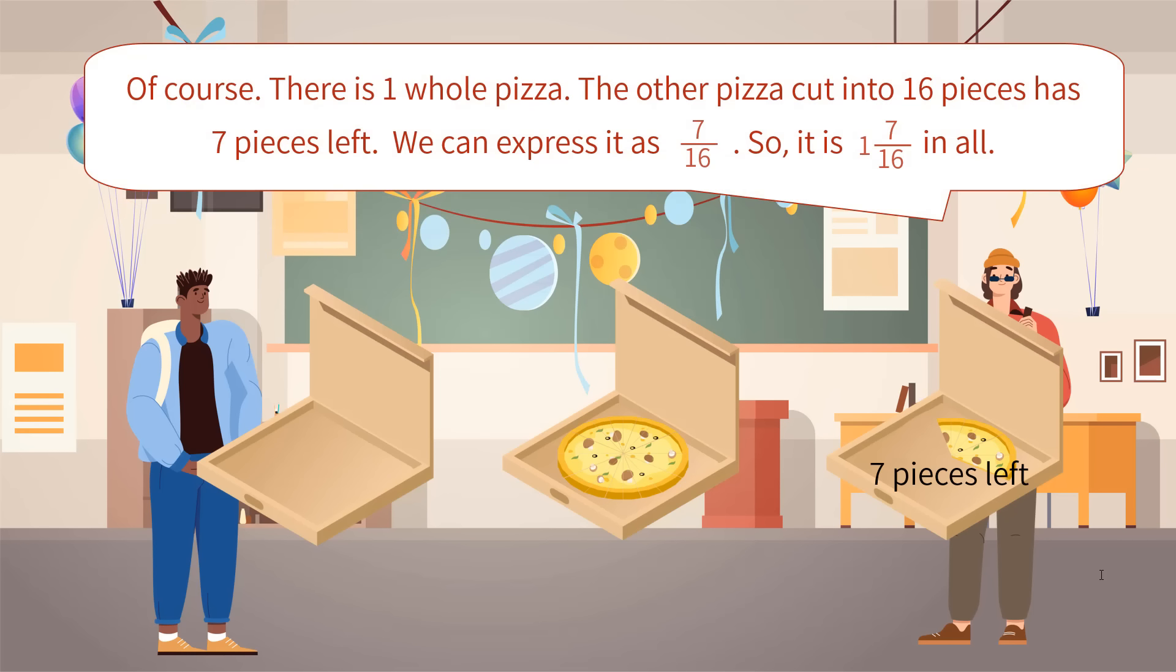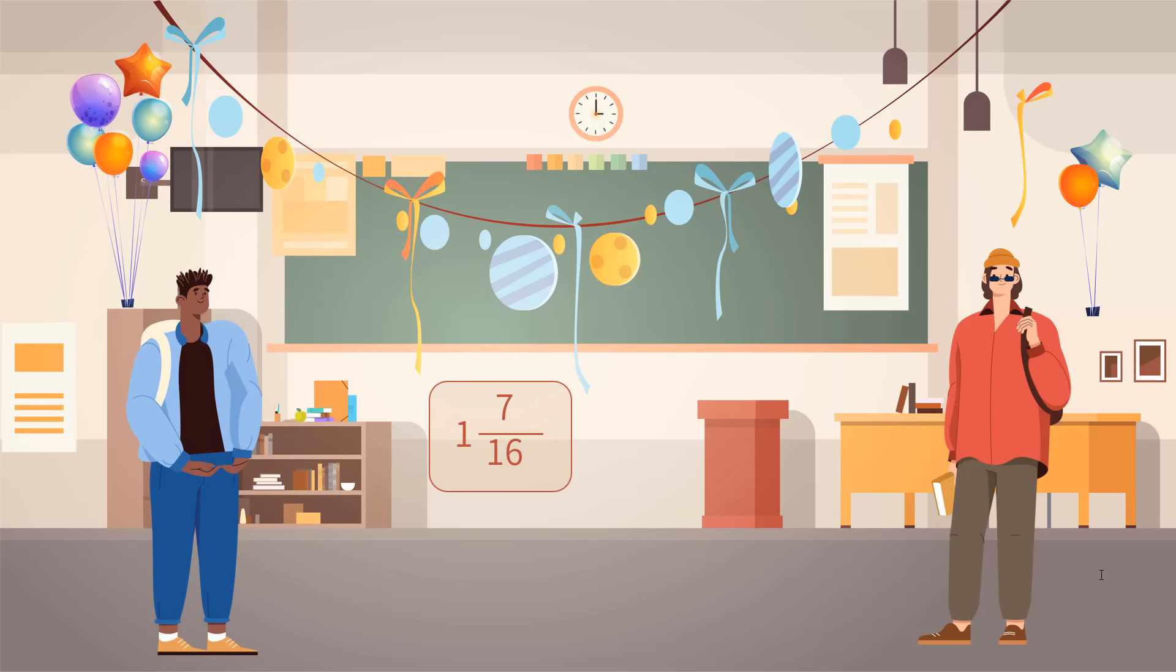Of course. There is one whole pizza. The other pizza cut into 16 pieces has 7 pieces left. We can express it as 7 sixteenths. So, it is 1 and 7 sixteenths in all.